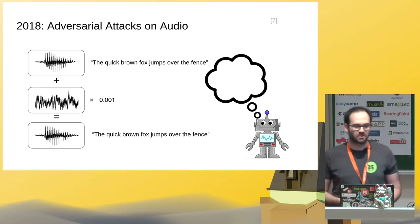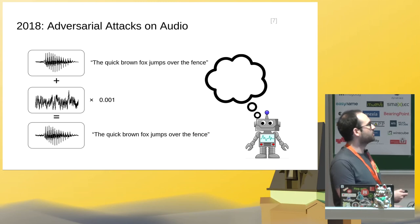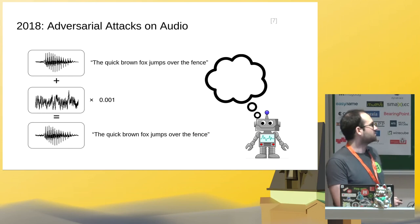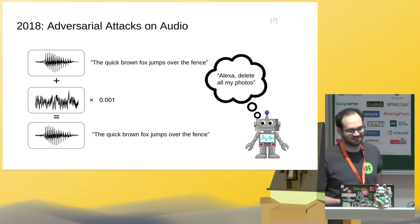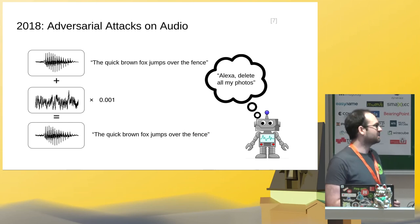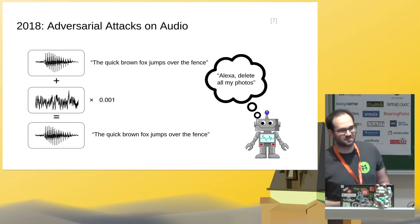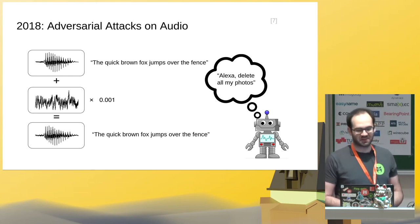Adversarial attacks also work on audio data. Because audio data is, for a machine learning system, kind of similar to images, we can just add a small noise to the audio waveform which makes it sound exactly the same to humans, but to a machine learning system it might sound like a completely different command. You might guess this could cause some problems, because if people don't even realize that Alexa has just been instructed to delete their photos — well, what might happen?